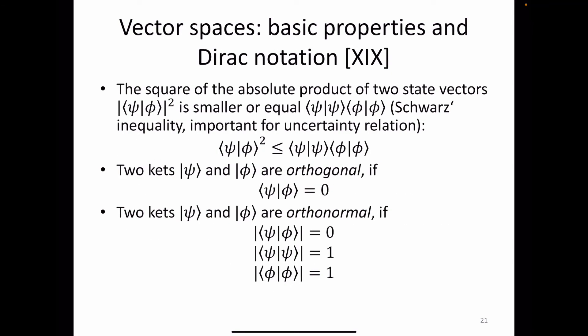Some more properties in Dirac notation. The square of the absolute inner product of two state vectors is smaller than or equal to the product of their norms — this is the Schwartz inequality, important for the uncertainty relation. Two kets are orthogonal if their inner product is zero; they are orthonormal if additionally each has inner product 1 with itself. So bra-psi ket-phi equals 0, bra-psi ket-psi equals 1, and bra-phi ket-phi equals 1.